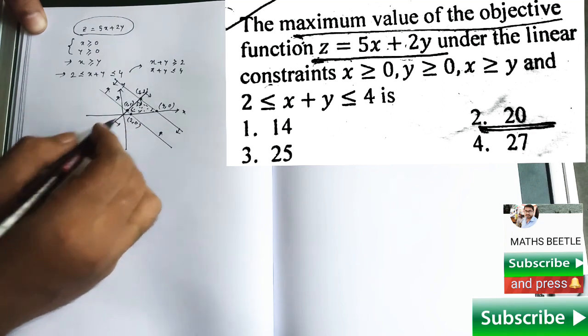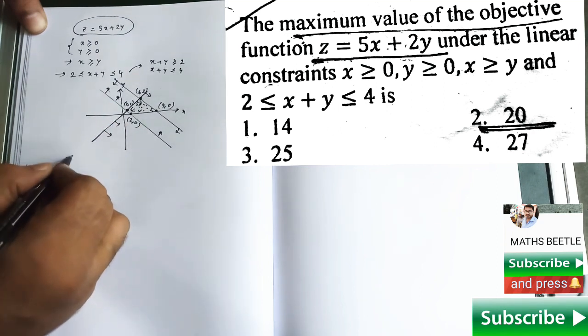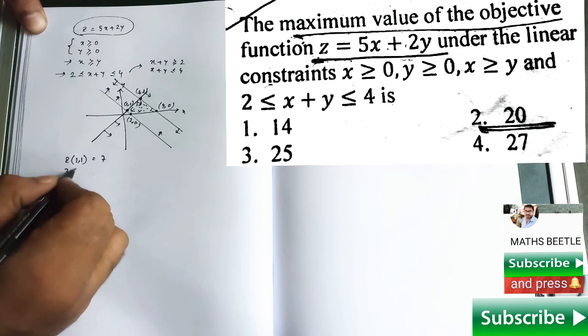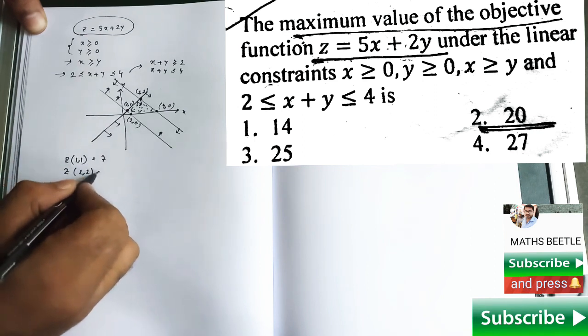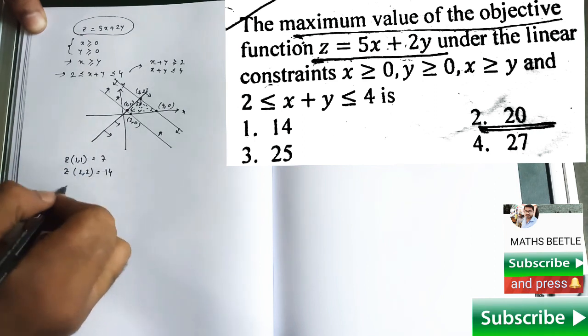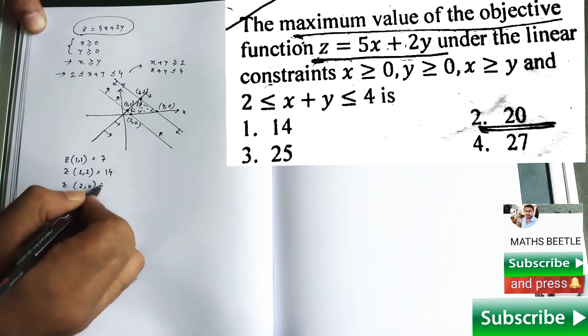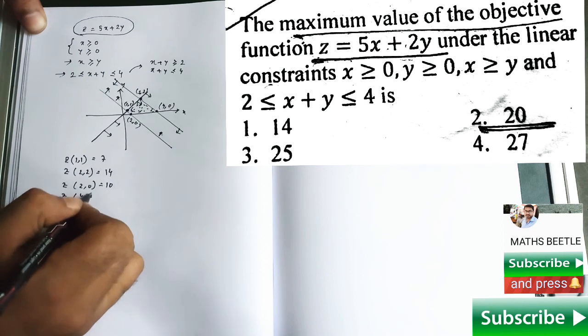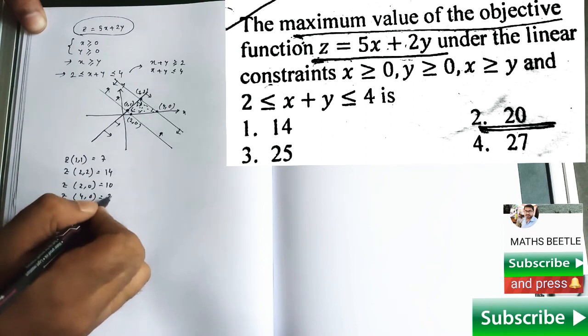Now, the corresponding values of z: at 1, 1 it will be 7; z at 2, 2 it will be 14; z at 2, 0 it will be 10; and z at 4, 0 it will be 20.